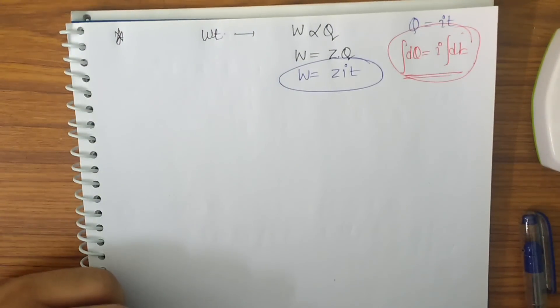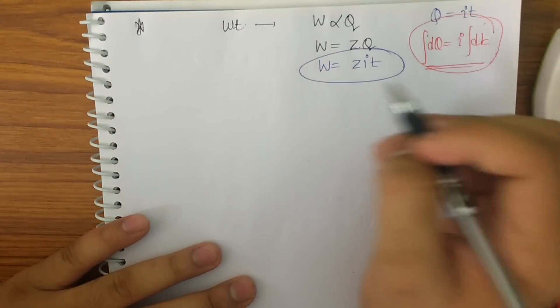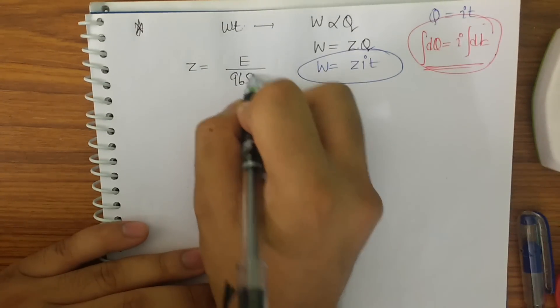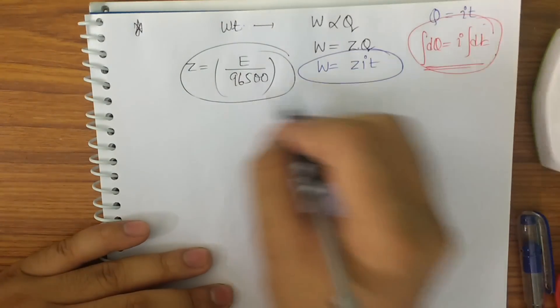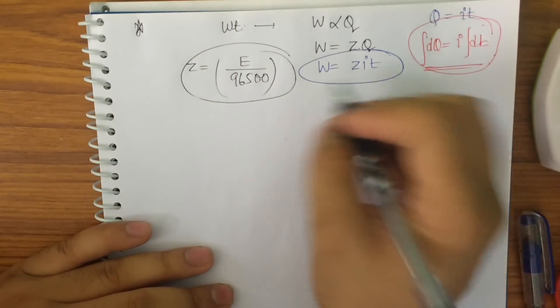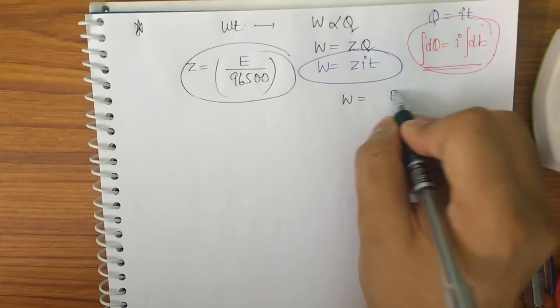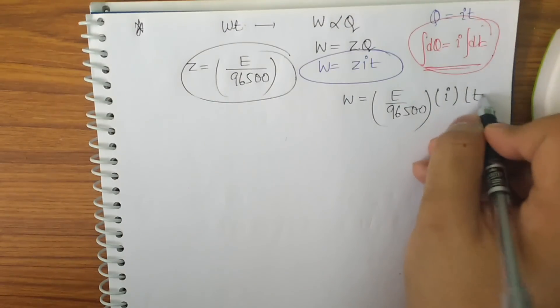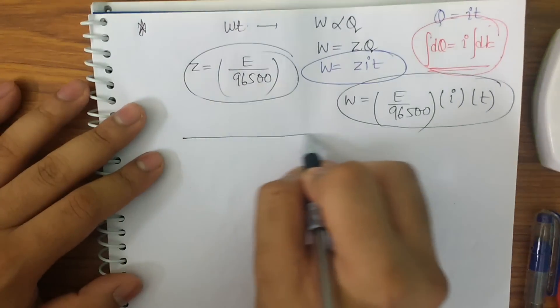Now let us do a simple question that how to apply it. Now first of all let's get thorough with what is Z. Z is equal to equivalent mass upon 96500. Where 96500 is 1 Faraday. So we can just put directly in the formula. So I get W is equal to E by 96500 into I into T. So this is how we have to solve this type of questions.